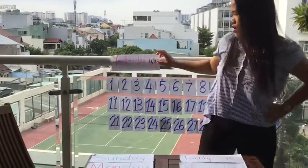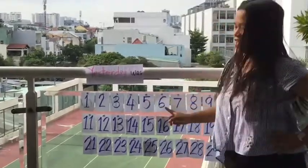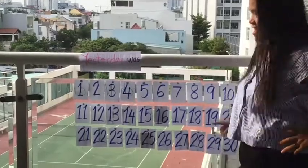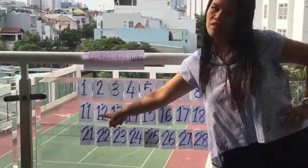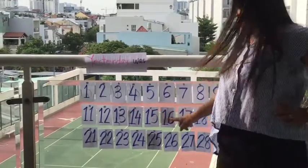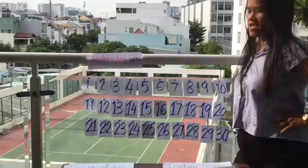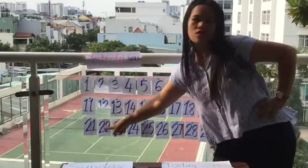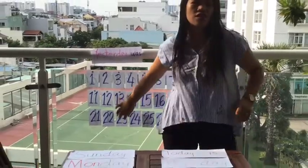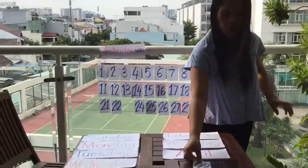One, two, three, four, five, six, seven, eight, nine, ten, eleven, twelve, thirteen, fourteen, fifteen, sixteen, seventeen, eighteen, nineteen, twenty, twenty-one, twenty-two, twenty-three. Yes! Twenty-three. Did you shake that body of yours? Did you shake, shake, shake? Twenty-three.